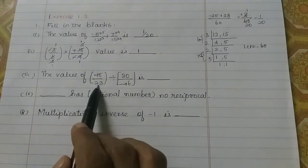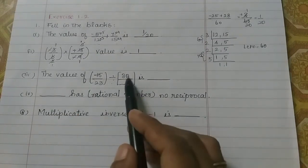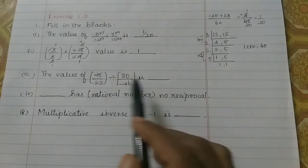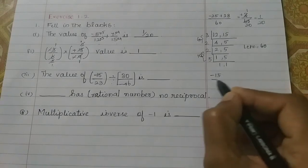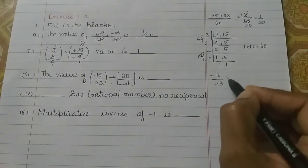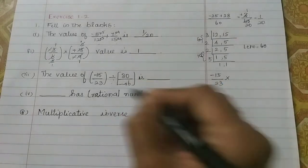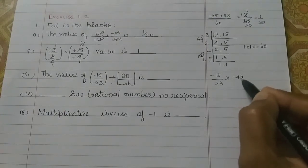Then, value of minus 15 by 23 divided by 30 by minus 46. There is division. So, what do we do? The division is 1. The division is into change. This is reciprocal. That is, minus 46 by 30.